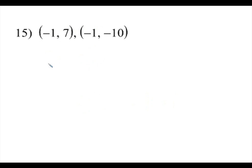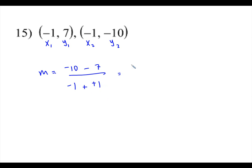Number fifteen: we're finding the slope again. So m equals negative 10 minus 7, and x2 is negative 1 minus x1 which is also negative 1 — the double negatives become positive. We end up with negative 17 on top and 0 in the denominator. When 0 is in the denominator, the slope is considered no slope, or undefined. If 0 happens to be on top, then the slope would be 0.